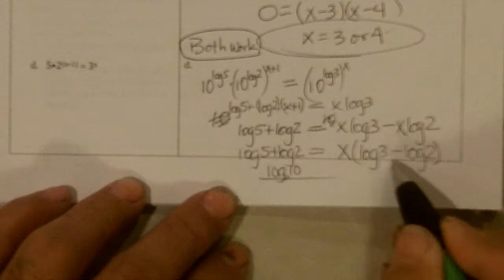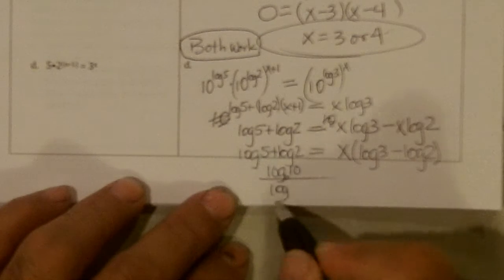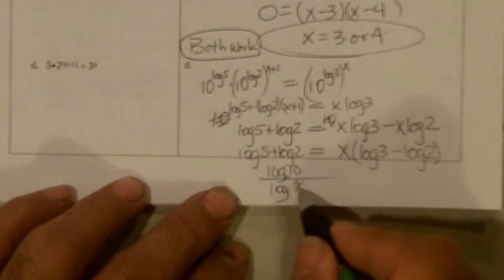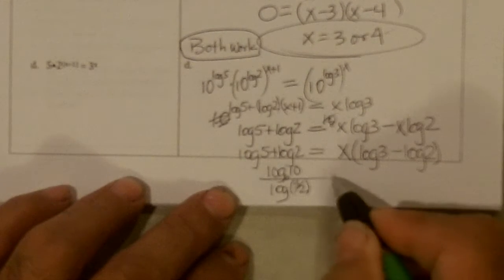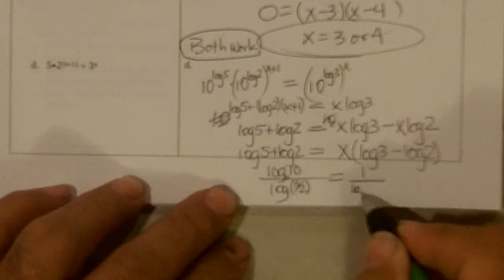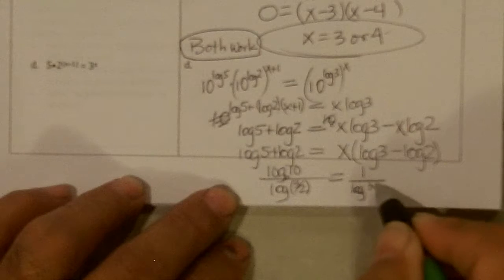And then this is going to be log of 3 minus, so that would be 3 divided by 2. So my answer is 1 over log of 3 over 2.